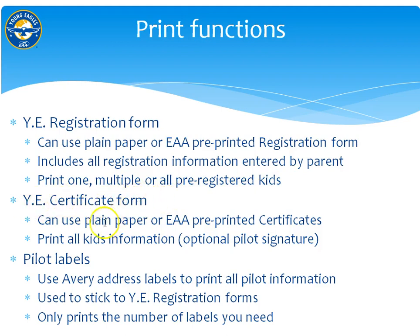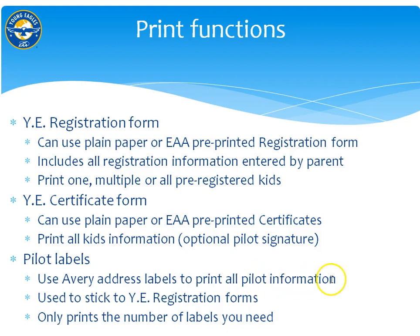The Young Eagle certificate can also use plain paper or the EAA pre-printed certificates. If you use pre-printed certificates you're going to save a lot of ink. It will print all the kids' information, and if the pilot uploads their signature it will include their signature on the certificate. The pilot labels use a standard Avery address label stock to print all the pilot information. You stick that onto the registration forms and only print the number of labels you really need for your event.